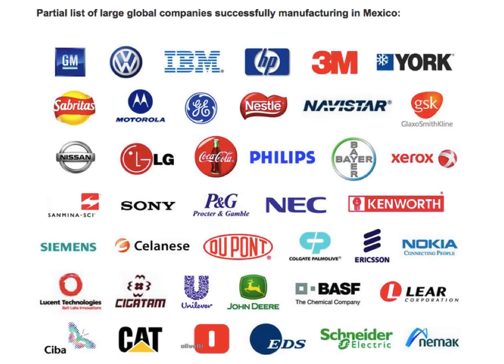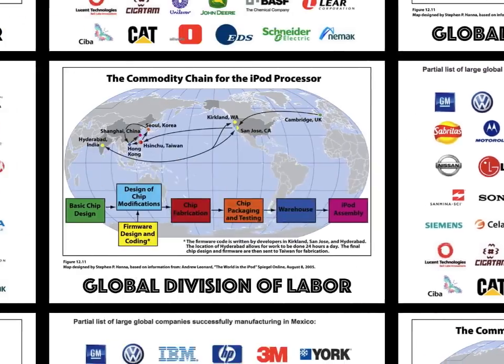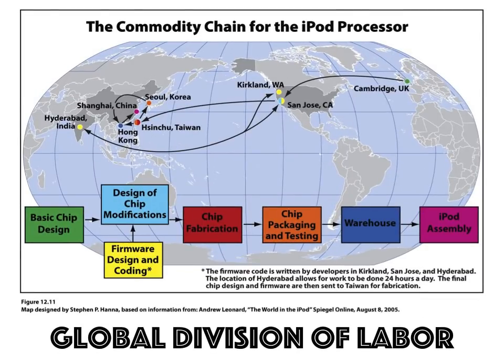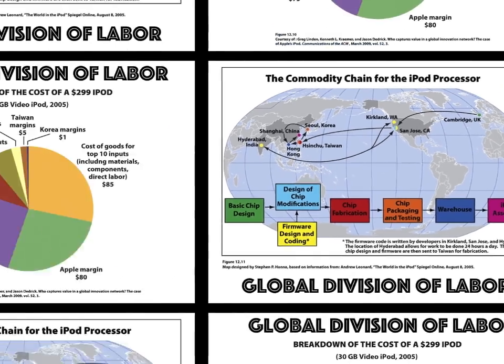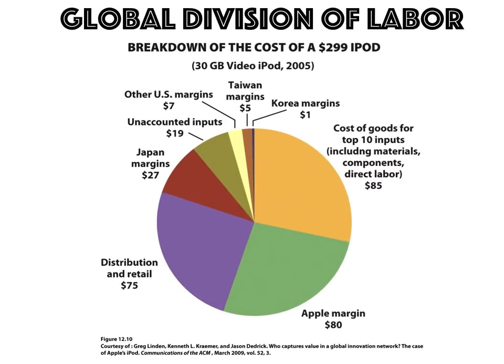A lot of manufacturing has also been offshored to Mexico, largely because of the NAFTA trade agreement. You can see a partial list of global companies that manufacture in Mexico. Another example is iPod processing, where research and design happens in the United States and India, while all production or manufacturing happens in Asia. A big portion of the cost breakdown goes to Apple just for the research and design, showing how wealth is distributed unevenly.